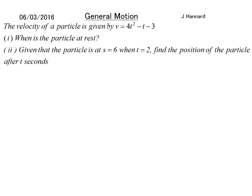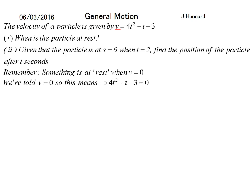Let's do an example here. The velocity of a particle is given by v = 4t² - t - 3. When is the particle at rest? We know that a particle is at rest when v equals 0. So we'll set our equation equal to 0 and solve it.